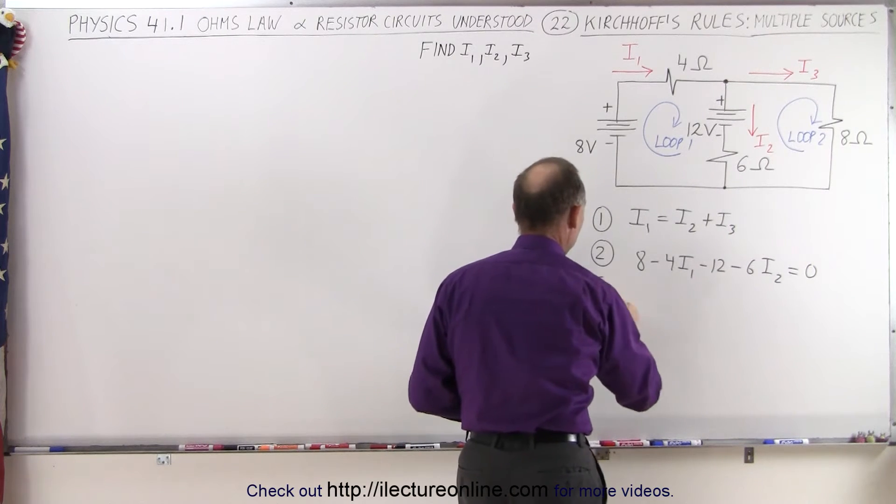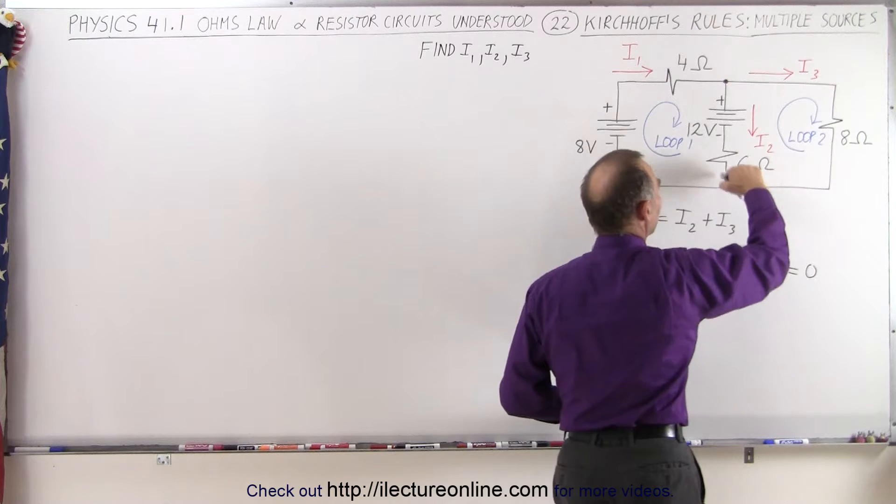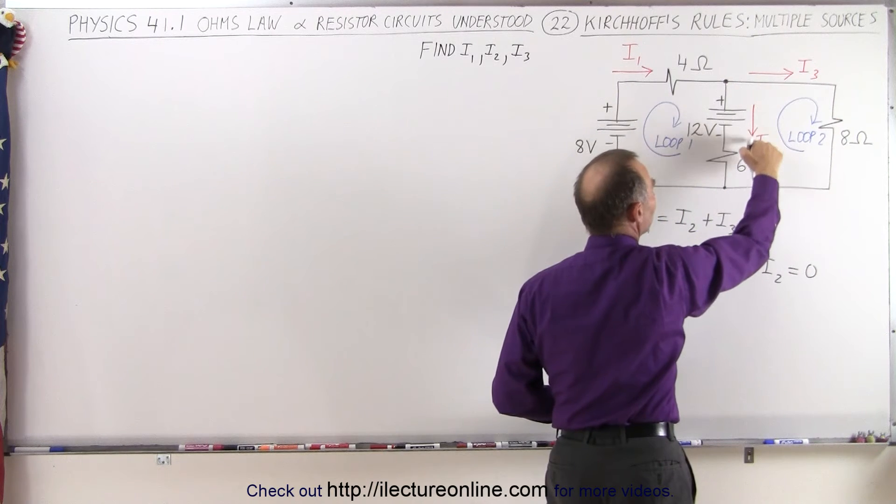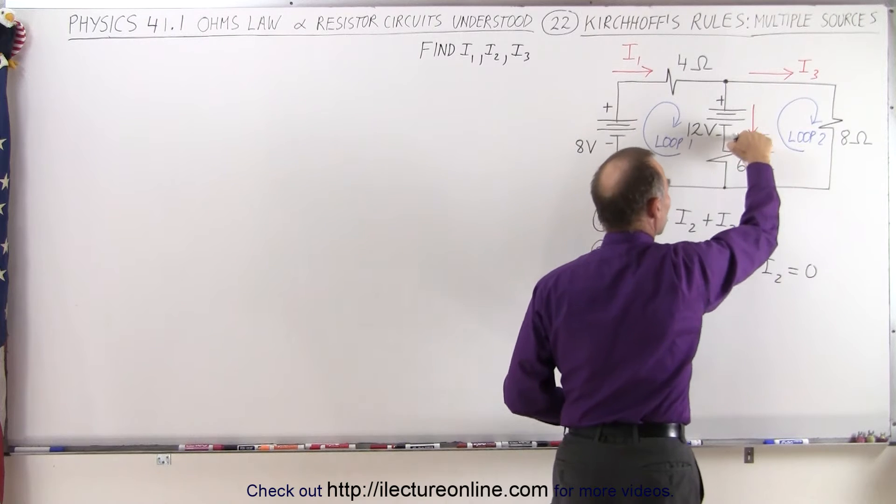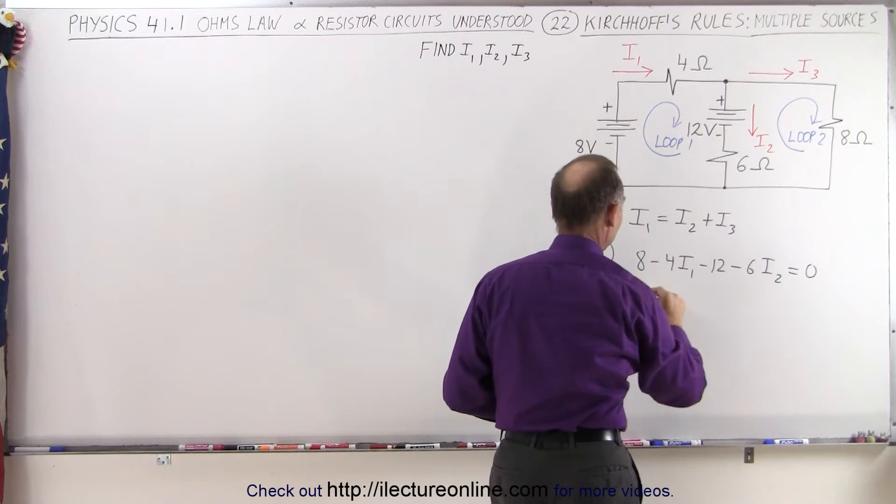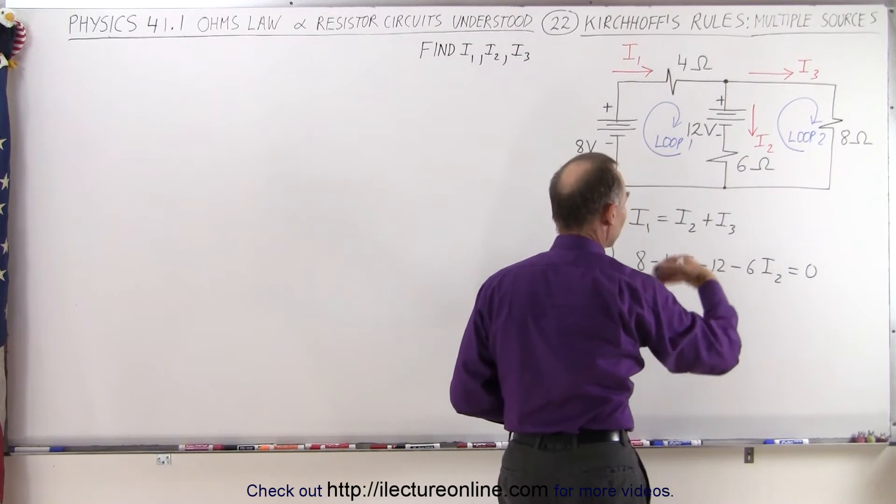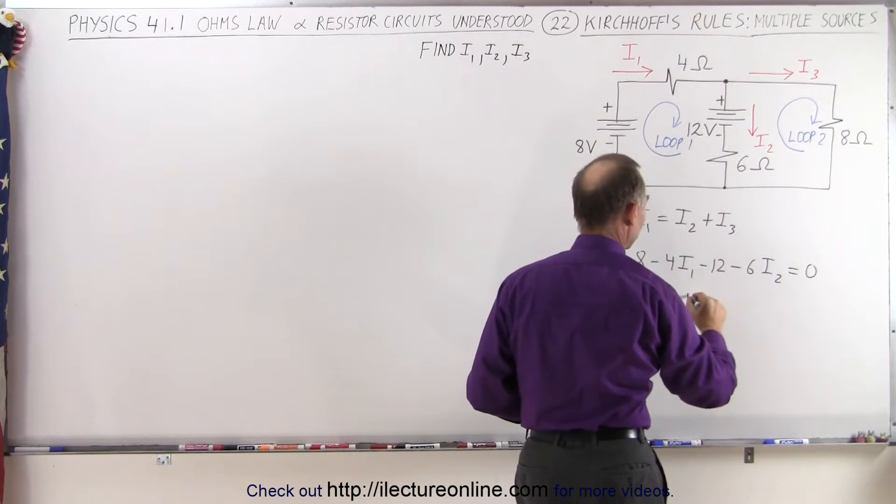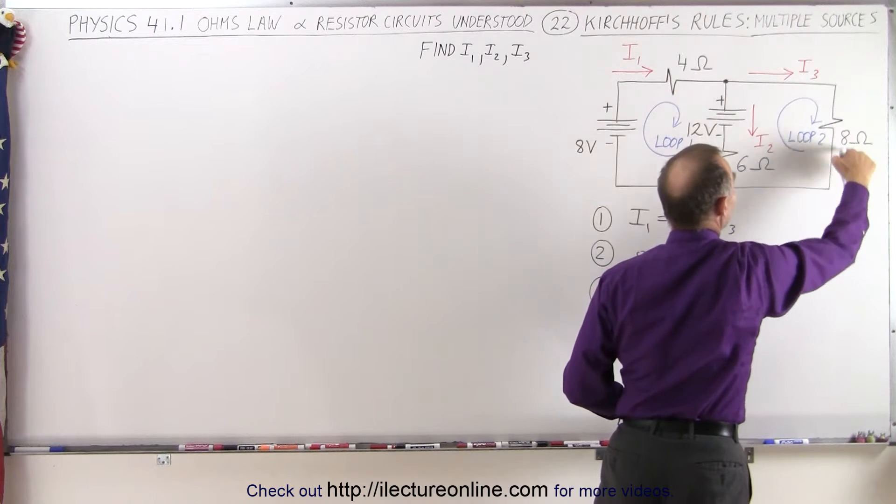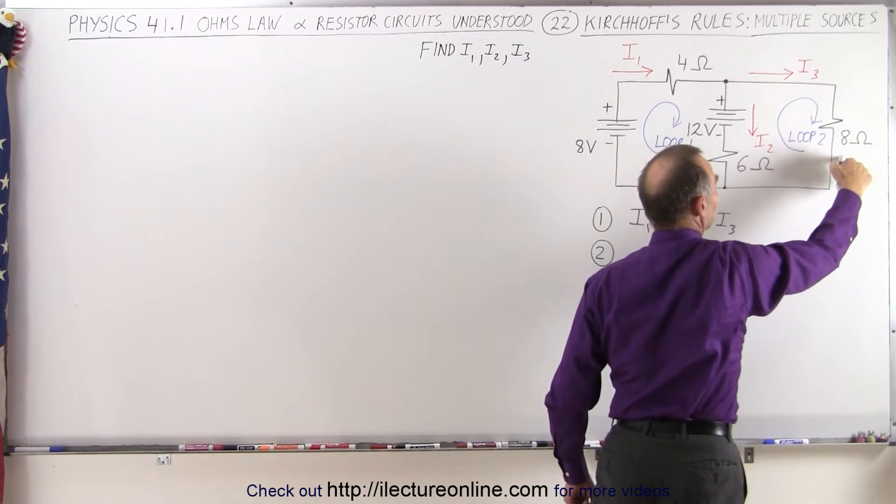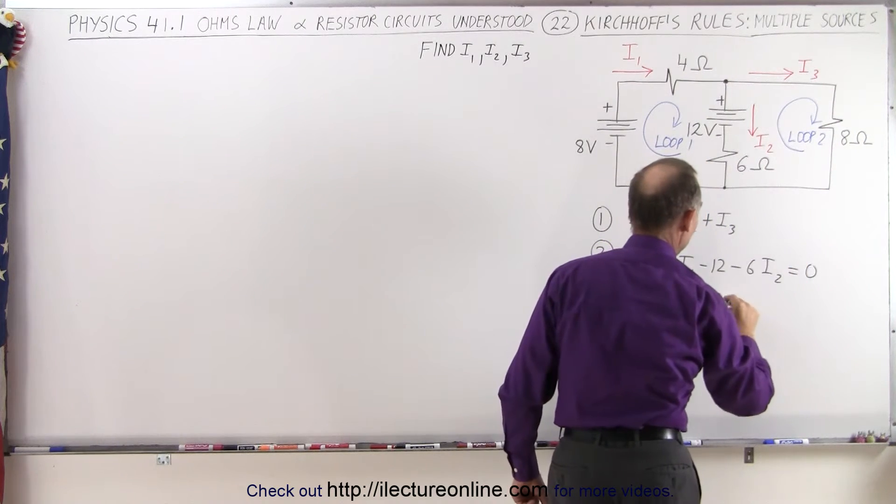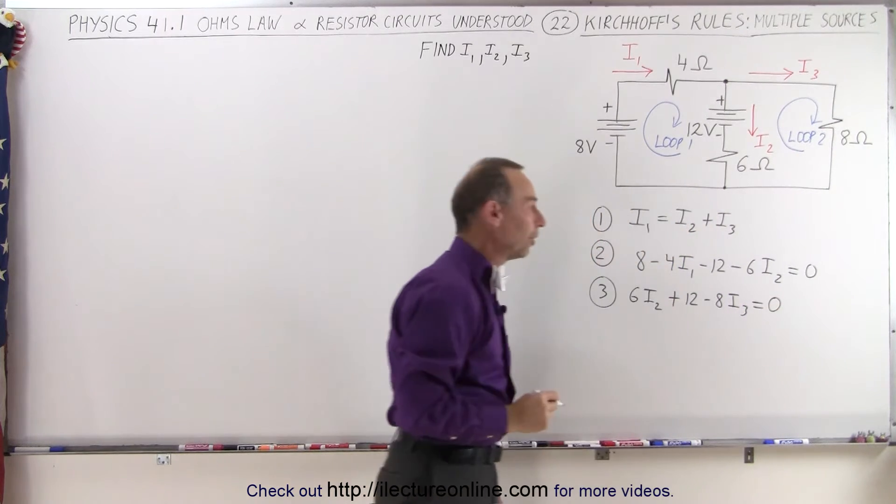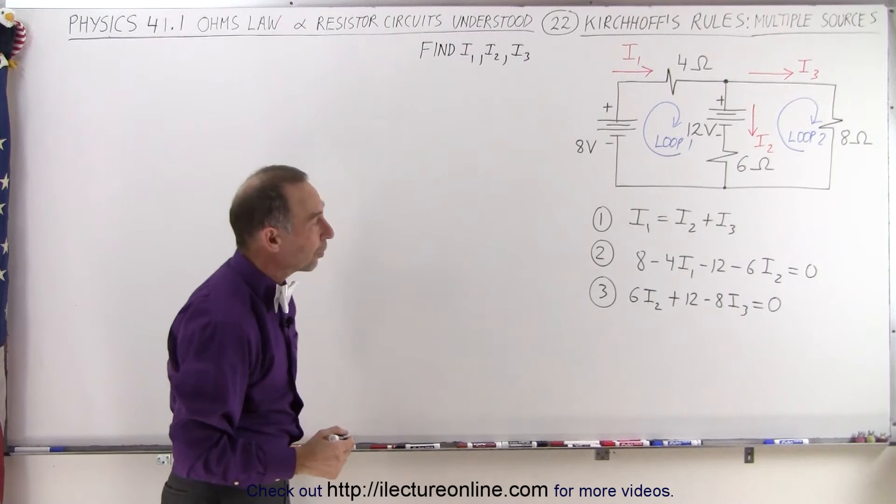And for equation three, we start at this point again, but now we go around the loop this way. Here, since we go against the opposite direction of the current, this will be a voltage rise. So it'll be six I2, the resistance times the current. Here we have a voltage rise, plus 12 volts. Come around the corner. Here we have a voltage drop. We go in the same direction as the current I3. So here we have minus eight I3, and set that equal to zero. So there are the three equations and the three unknowns.